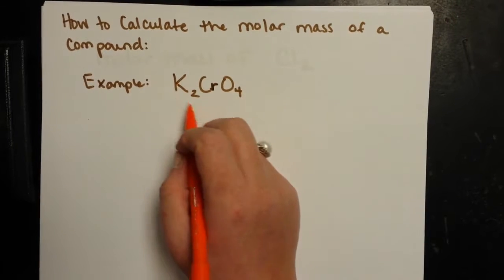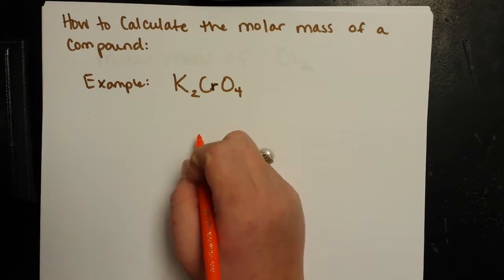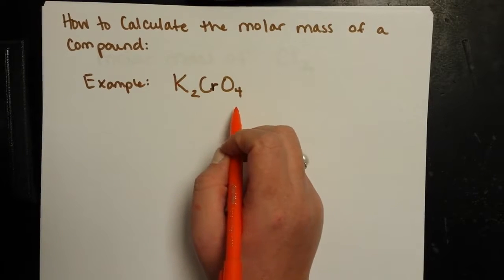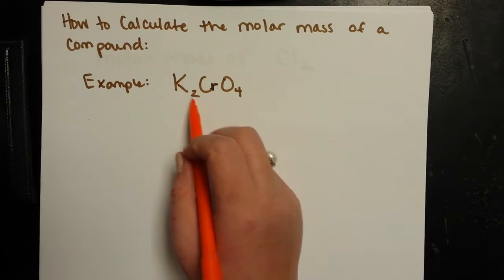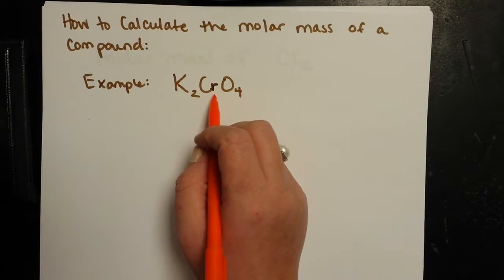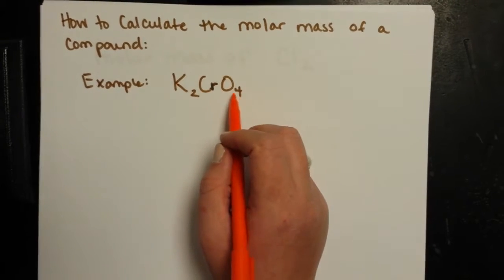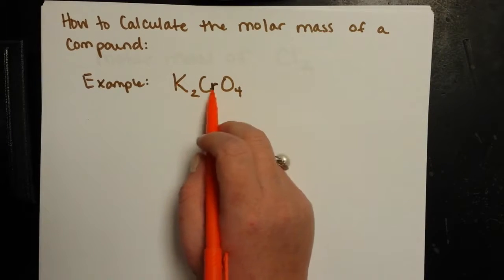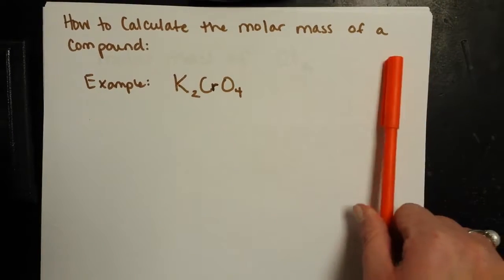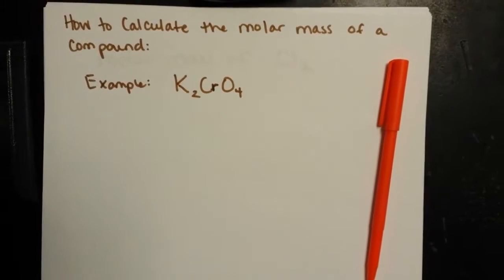So if I look at the formula for potassium chromate, K2CrO4, I know that every one mole of potassium chromate has two moles of potassium, one mole of chromium, and four moles of oxygen. So if I were to take the mass of all of these and keep them in the same ratio, I can add them up to find the molar mass.